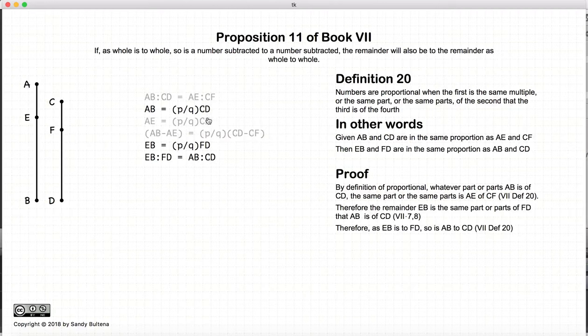And again, by the definition of what it means to be proportional, since AB is the same fractions of CD as EB is of FD, then EB to FD is the same proportion as AB to CD.